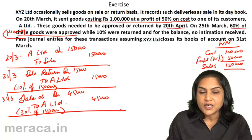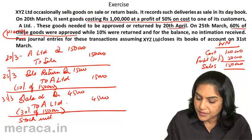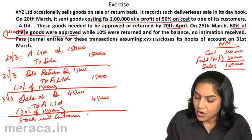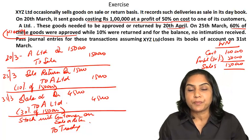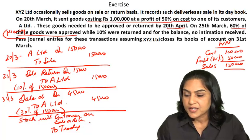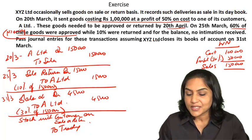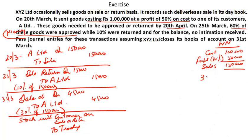We would also have to bring this stock into our books. The entry would be: Stock with Customer on Sale or Return debit to Trading Account. The value is at cost or realizable value, whichever is lower. Since we sold at a profit, we consider it at cost: 30% of ₹1 lakh, which is ₹30,000.